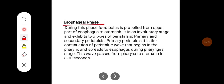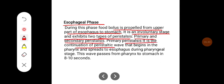Coming to the esophageal phase: during this phase, the food bolus is propelled from the upper part of the esophagus to the stomach. It is an involuntary stage and exhibits two types of peristalsis — primary and secondary. Primary peristalsis is the continuation of the peristaltic wave that begins in the pharynx and spreads to the esophagus during the pharyngeal stage. This wave passes from the pharynx to the stomach in 8 to 10 seconds.